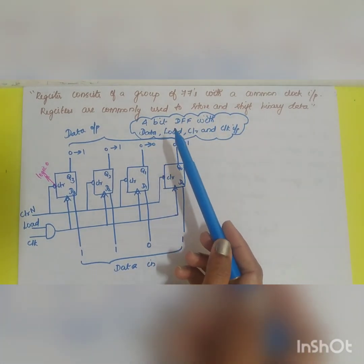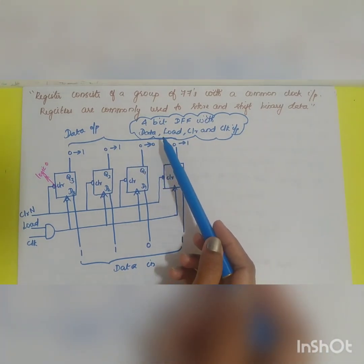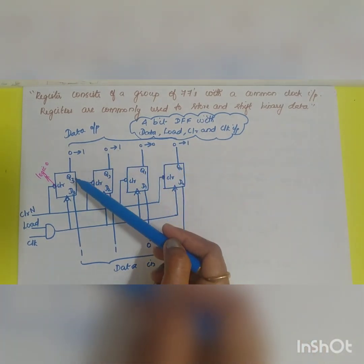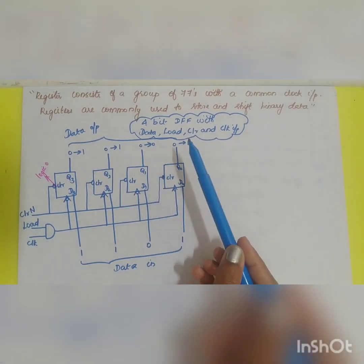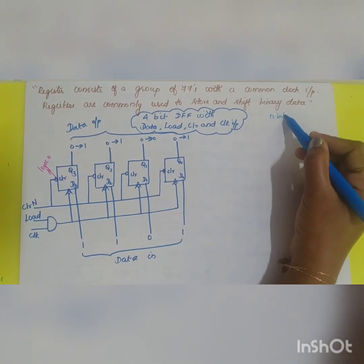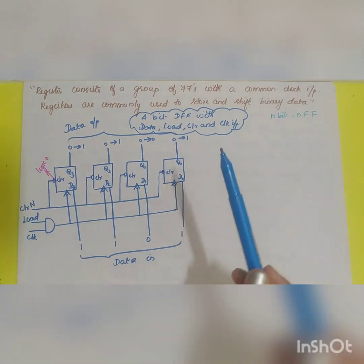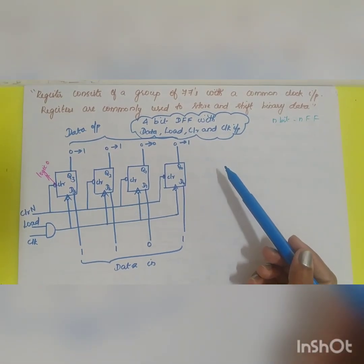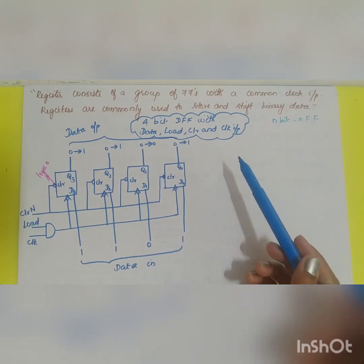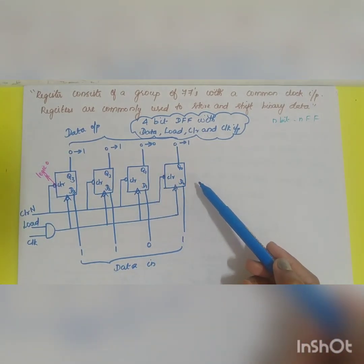If you want to store 2-bit data then you require 2 flip-flops. Similarly if you want to store 4-bit data you need 4 flip-flops. To store n-bit data you require n flip-flops. The question here is 4-bit D flip-flop with data, load, clear and clock input. So for a 4-bit register you require 4 different flip-flops.